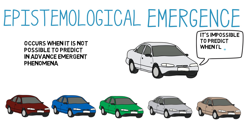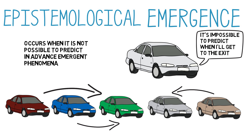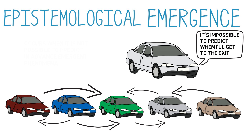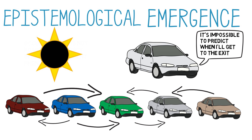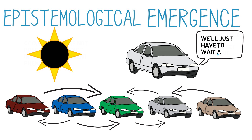You move one step at a time, and it is impossible to predict, even to the nearest half an hour, when you will all get to the exit. This is because of the number and complexity of the interactions between the cars. Knowledge of that future event cannot be reduced to a prediction from a small set of basic principles, in the way that we can predict a solar eclipse. The only thing to do in the parking lot is to wait until the event occurs.